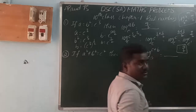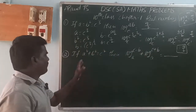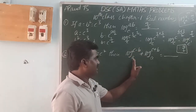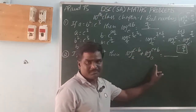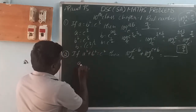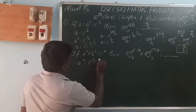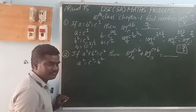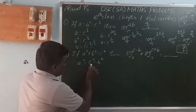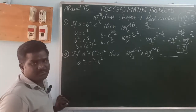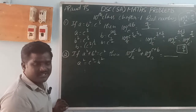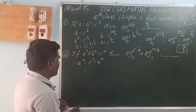Next problem: if a squared plus b squared equals c squared, then find log(c minus b) base a plus log(c plus b) base a. Here b squared equals c squared minus a squared. This uses the algebraic identity a squared minus b squared equals a plus b times a minus b.